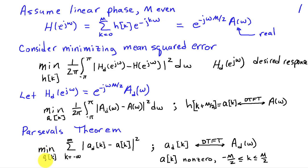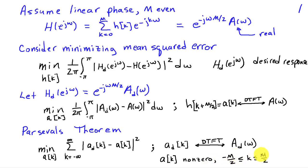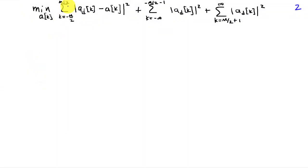So I can write this problem as: minimize over a[k] the sum from k equals minus infinity to infinity of |a_d[k] minus a[k]| squared, where a_d[k] is the inverse DTFT of A_d of omega, our desired real-valued response. The key here is that for a finite impulse response filter, these coefficients must be non-zero only on the interval between minus m over 2 and plus m over 2. Expanding this error over different regions for k, we write the sum from k equals minus m over 2 to m over 2—where the a[k]'s can be non-zero—as |a_d[k] minus a[k]| squared, plus the contributions from the regions outside that interval.